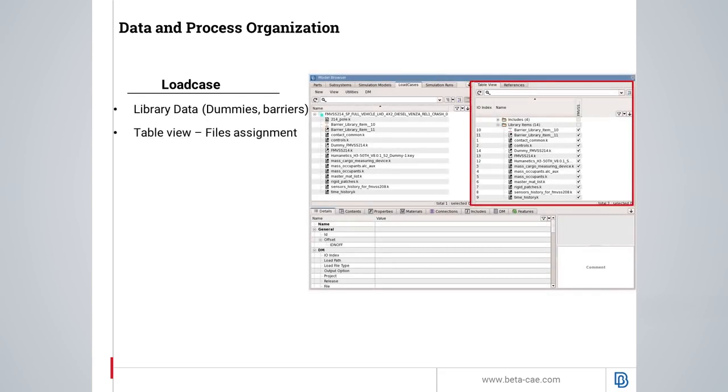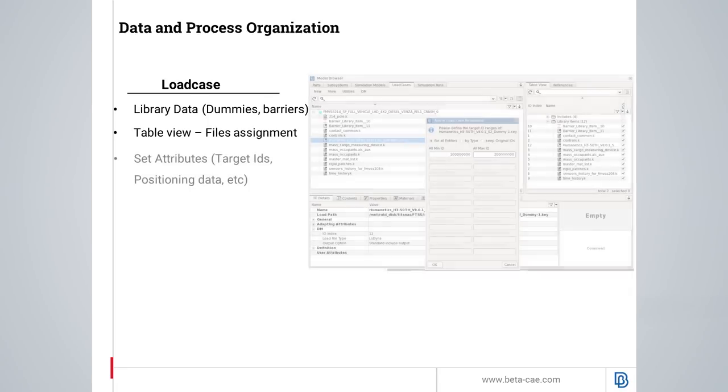The table view in the model browser is a view mode where all the available load case items are listed. By just activating a flag button, one can include a library item in a load case.